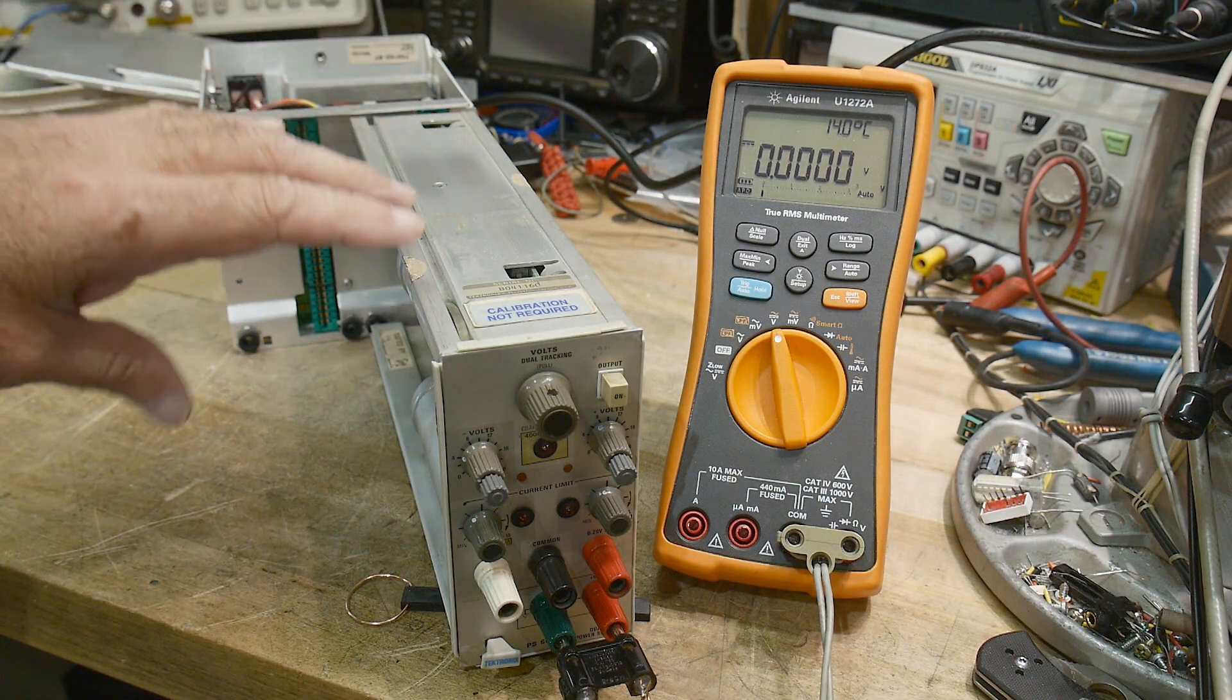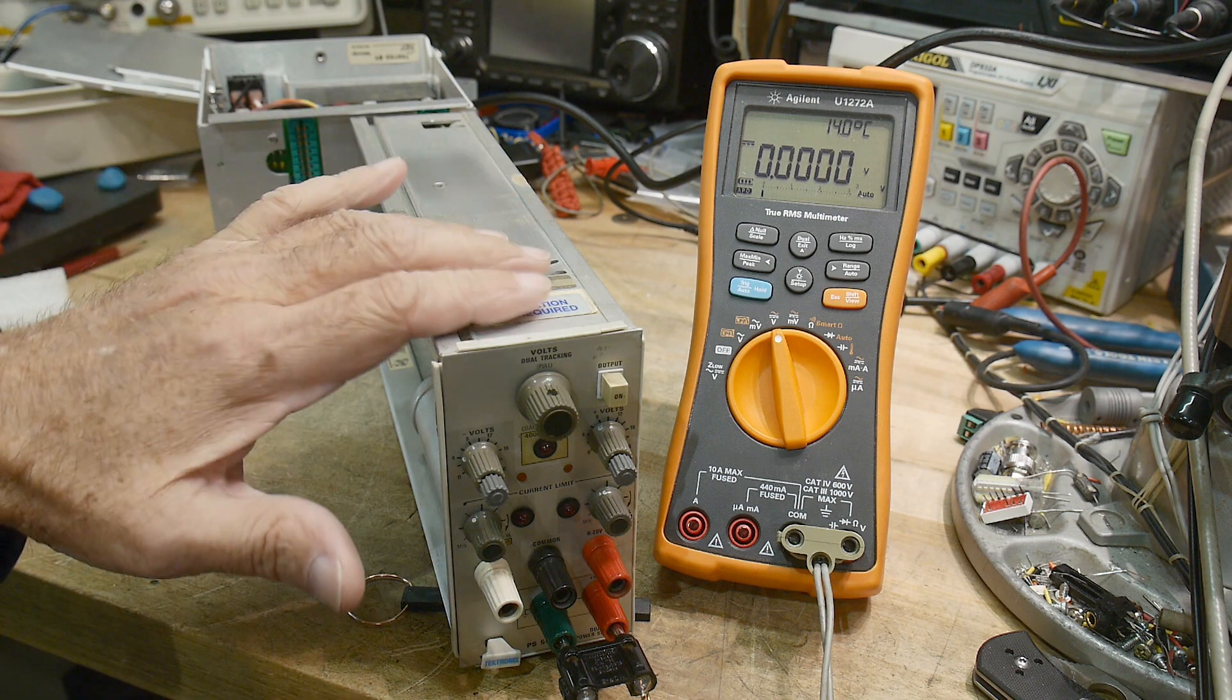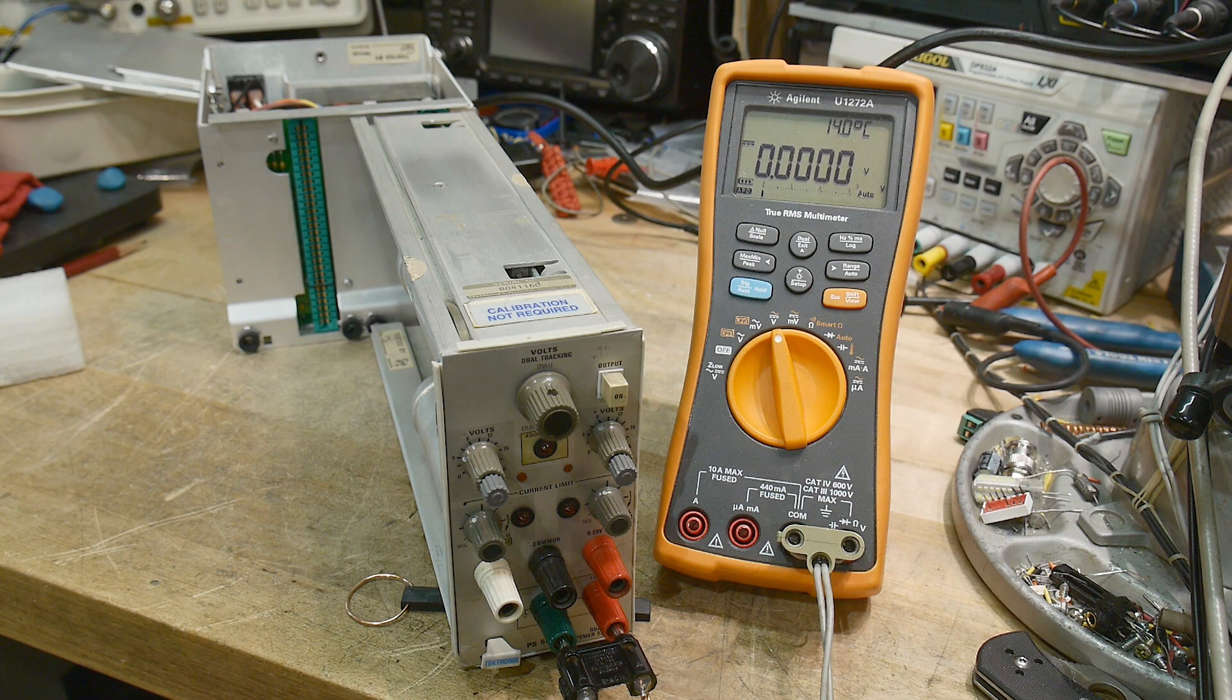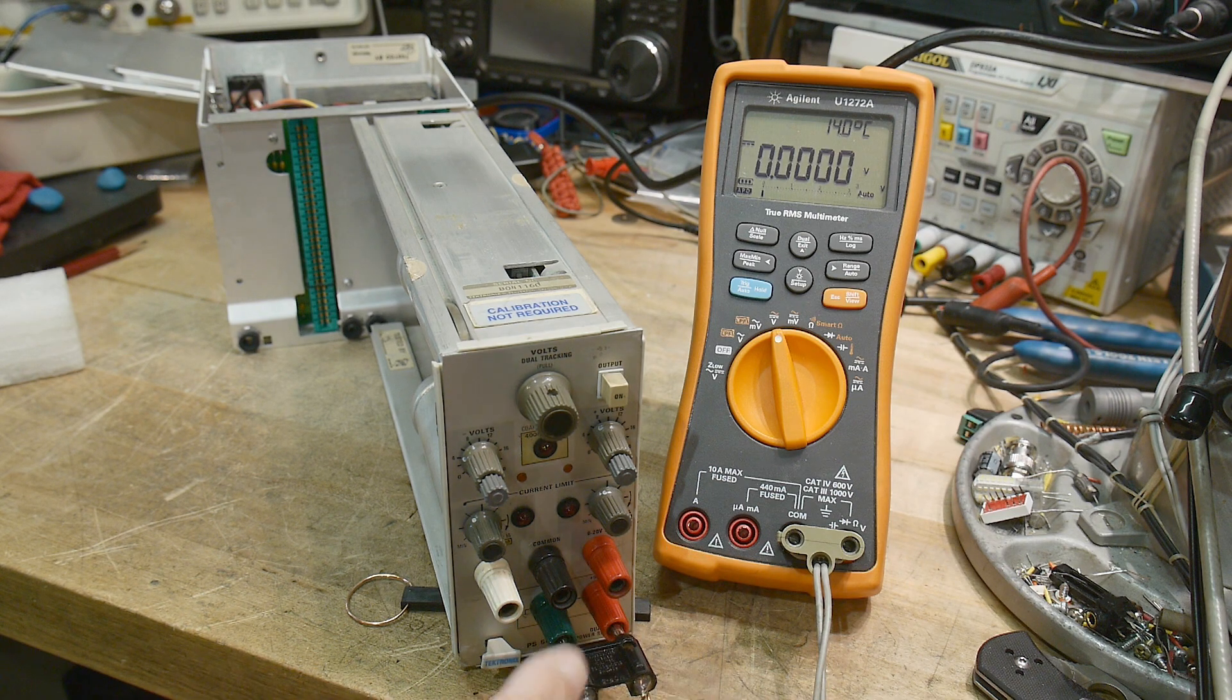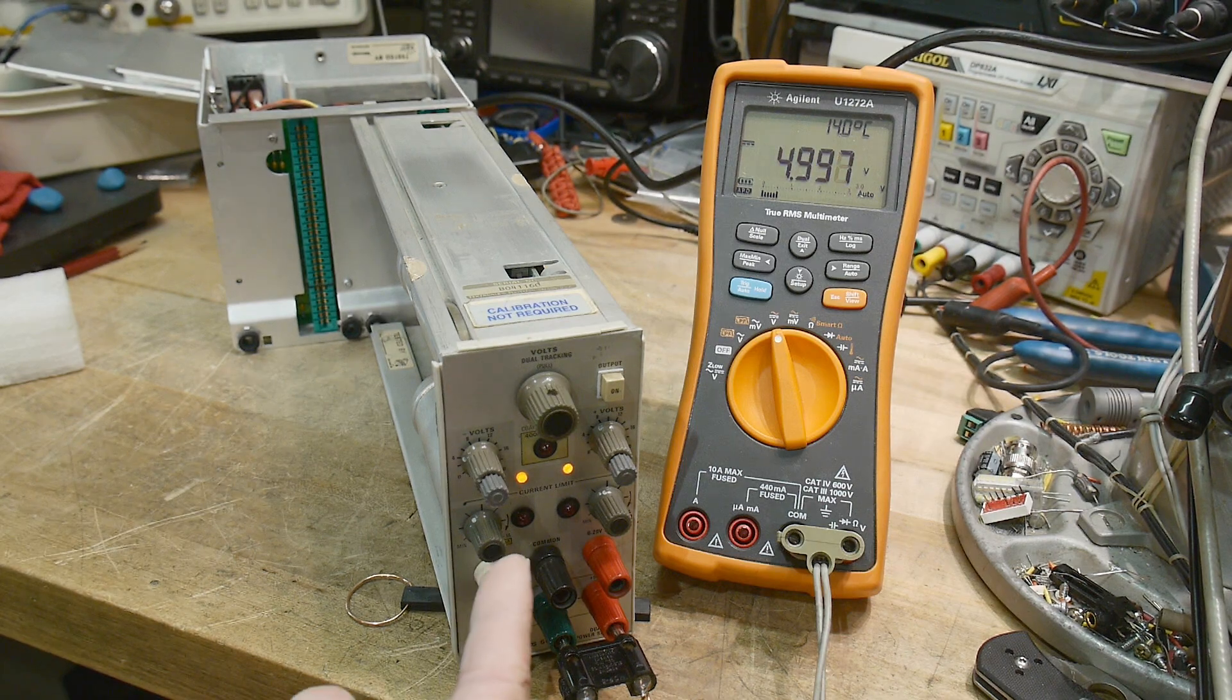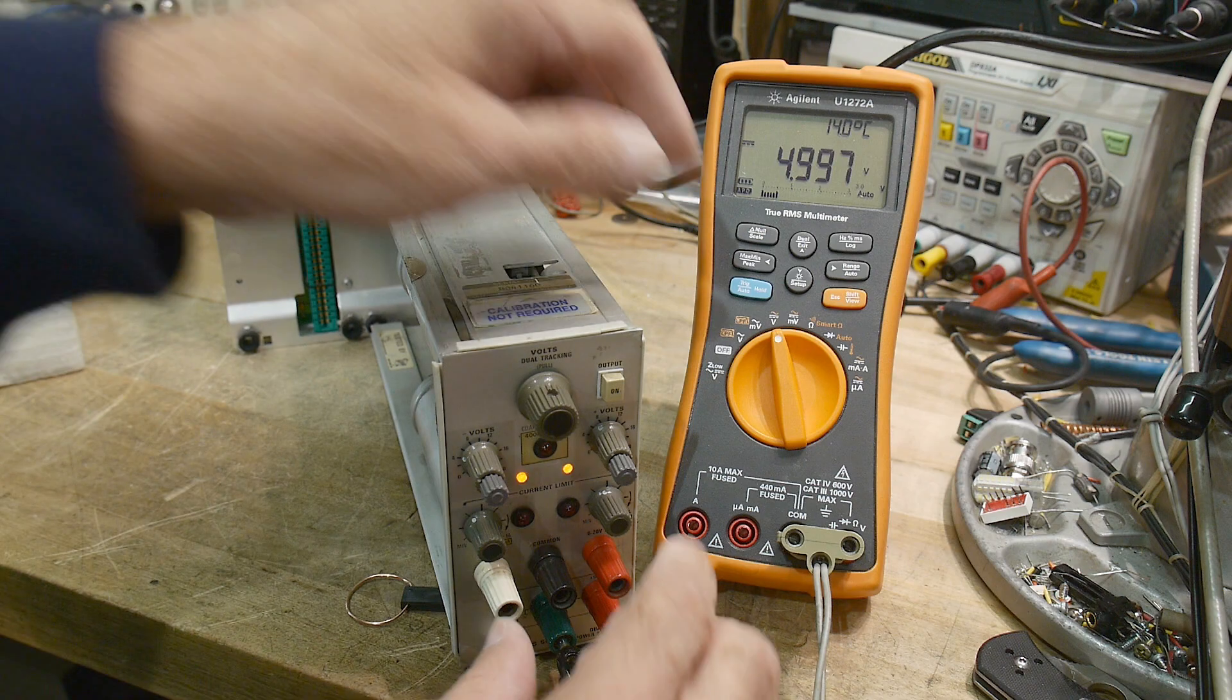I've got my bench power supply now for these Tektronix modules so we can try this power supply out. This is a PS503A and it has plus or minus adjustables and then a 5 volt down here. So let's turn it on.